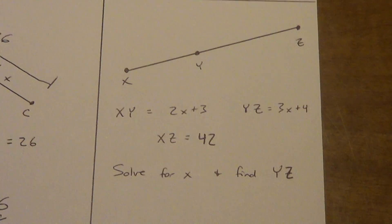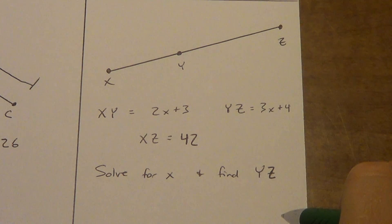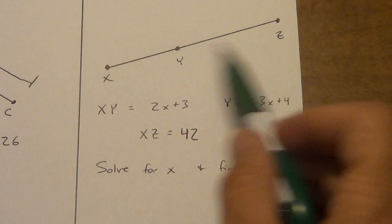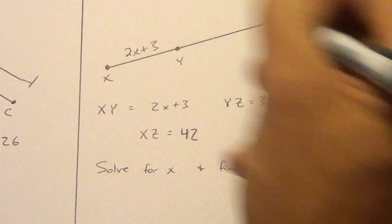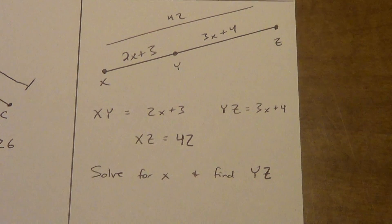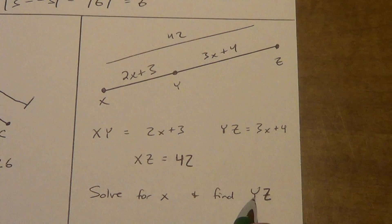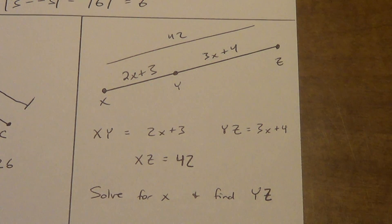Last example — a little harder, still Segment Addition. Y is between X and Z. XY equals 2X plus 3, YZ equals 3X plus 4, and the whole segment XZ equals 42. Solve for X and then find the length of YZ. Remember, 'find YZ' without a symbol means find the length. Go ahead and pause and attempt it.